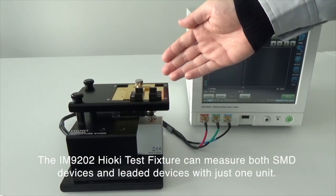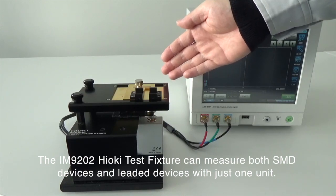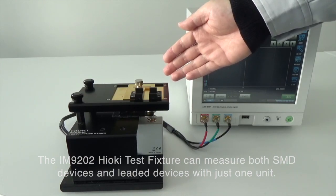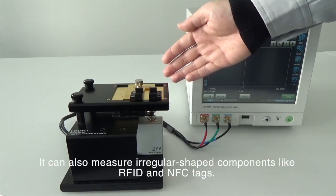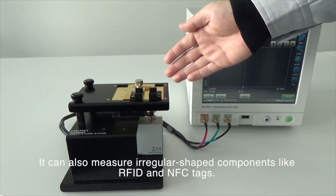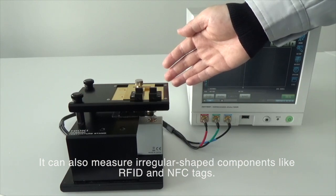The IM9202 Hioki test fixture can measure both SMD devices and leaded devices with just one unit. It can also measure irregular shaped components like RFID and NFC tags.